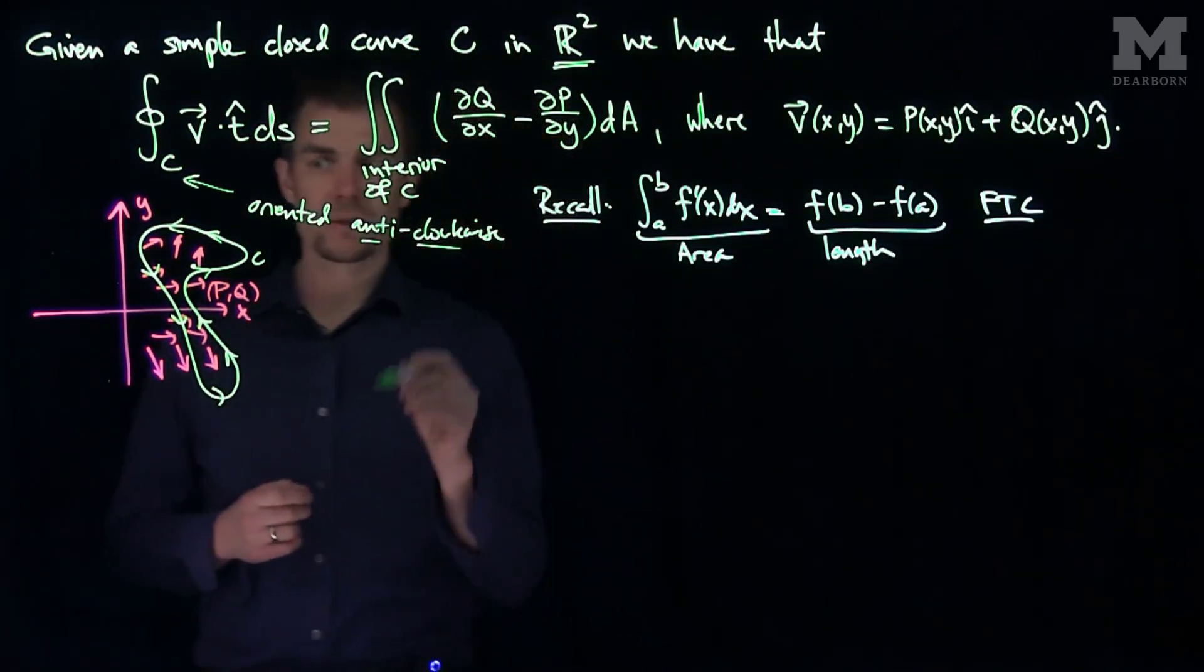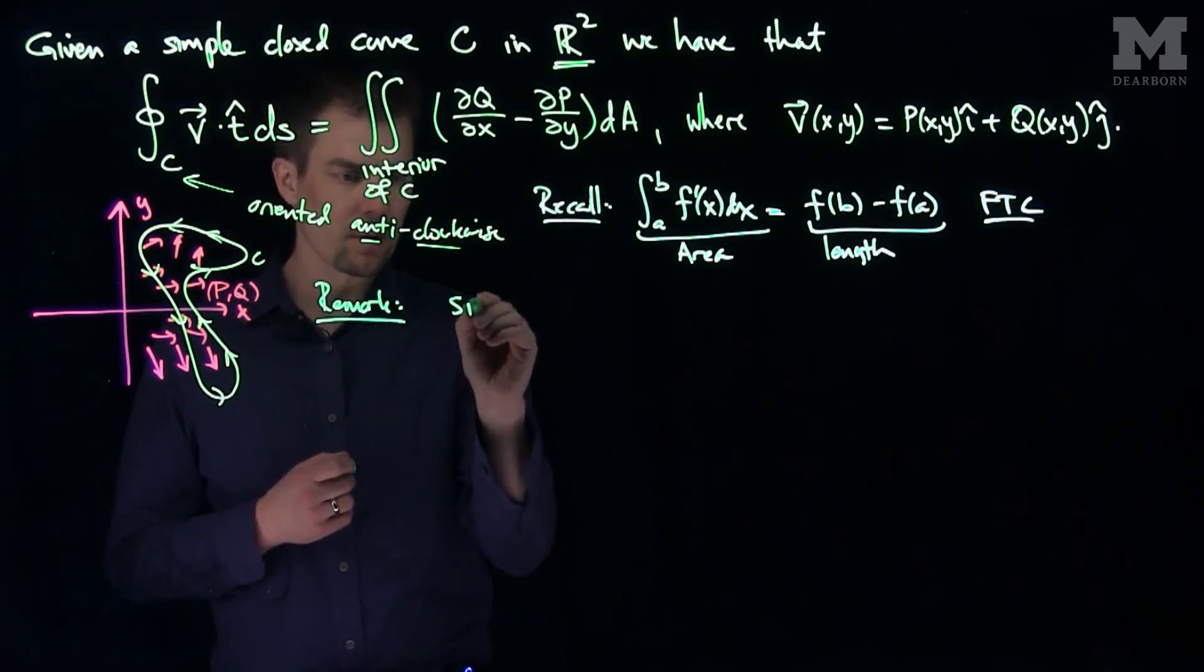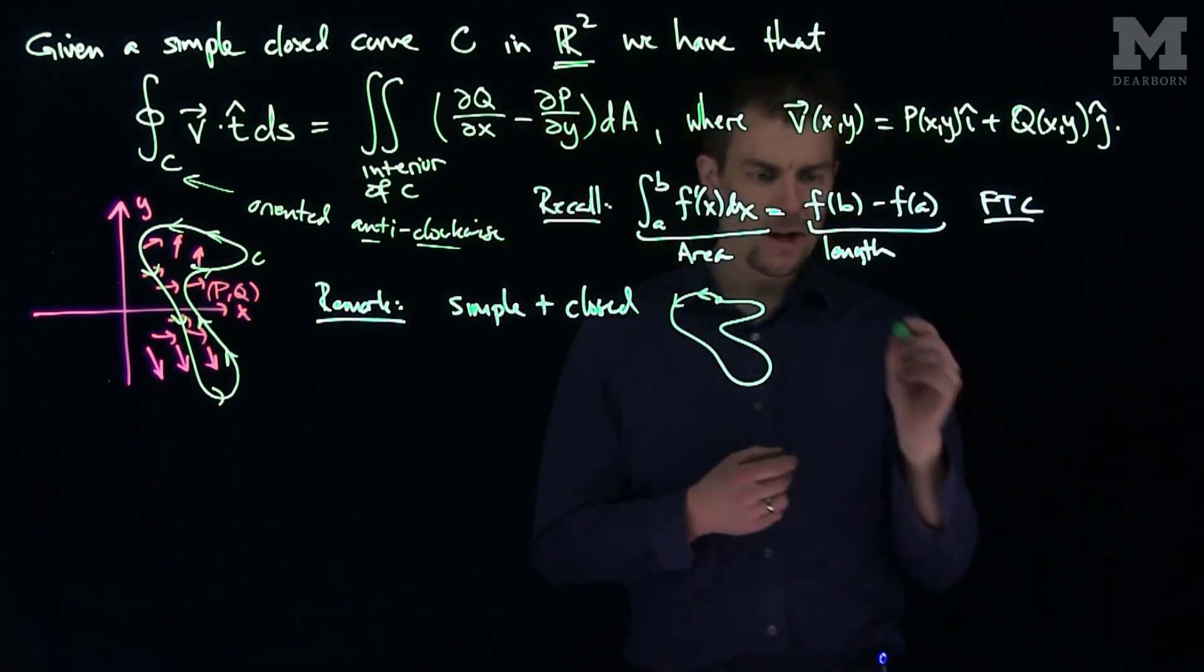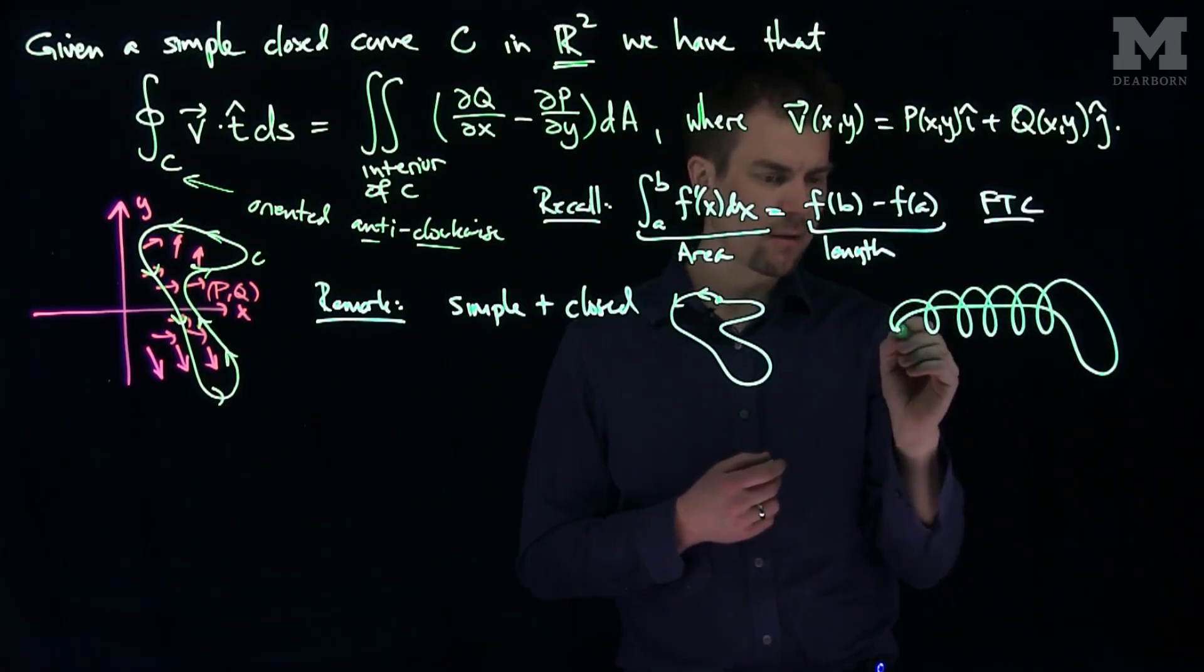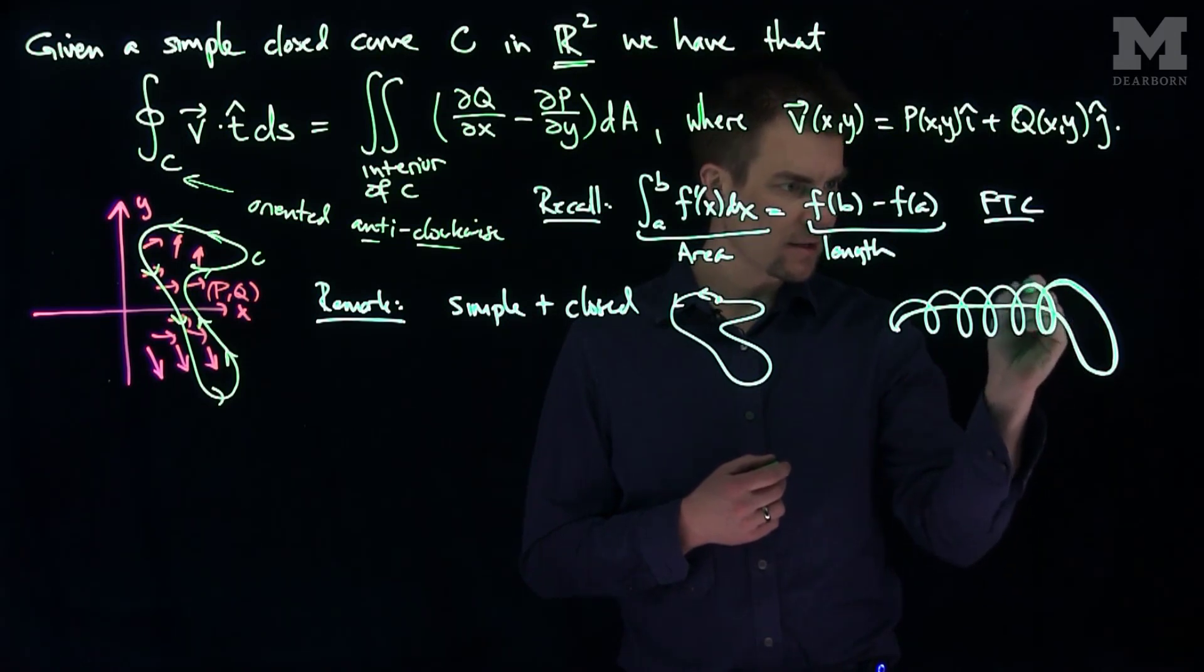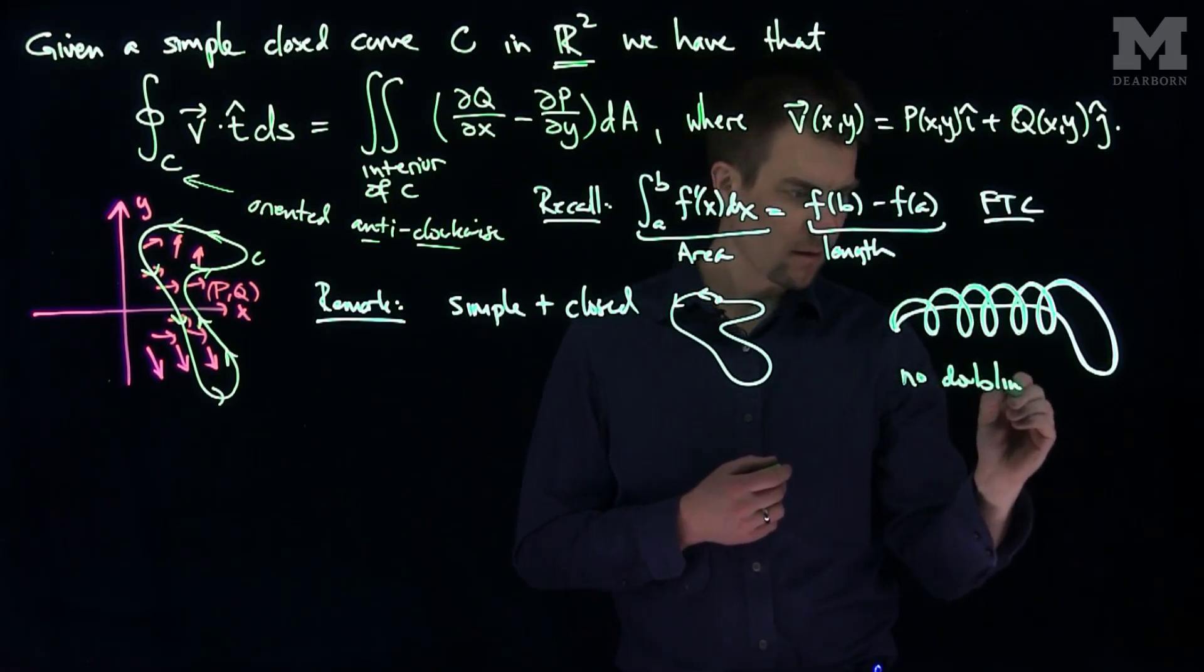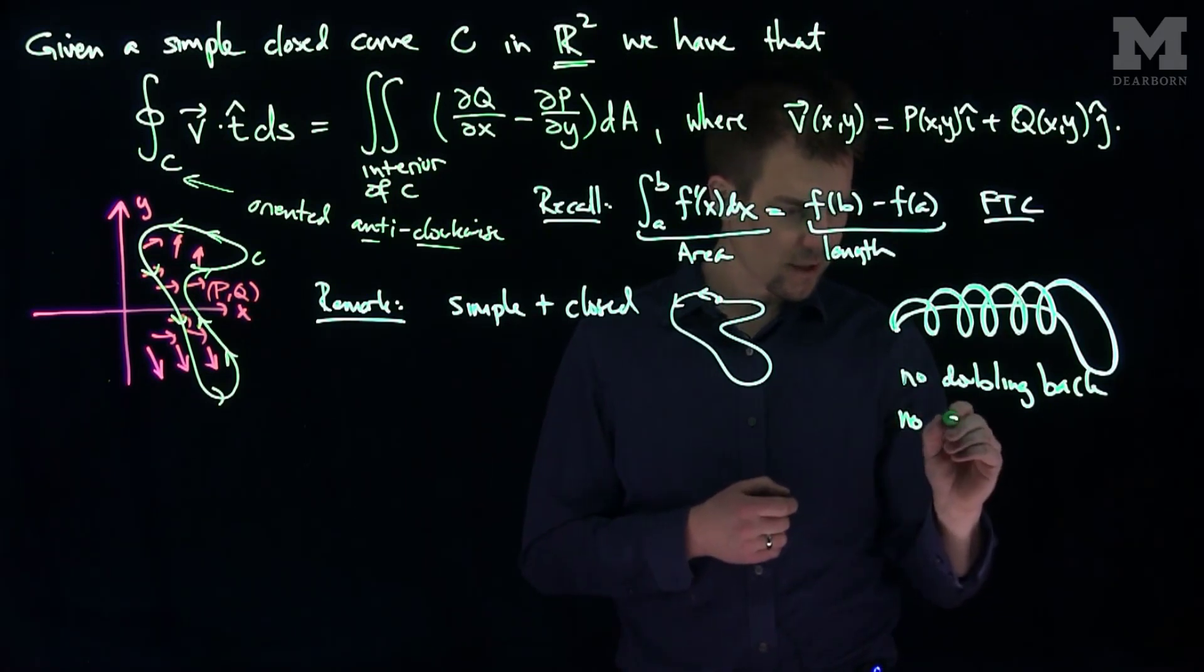When we're talking about this version of Green's theorem, let's make some remarks. Remark: simple and closed means the curve looks something like this. What would not simple be? Not simple would look something like this, where the curve crosses itself and the curve might double back on itself also. So we don't want the curve to double back and we don't want the curve to cross. No doubling back and no crossings, no self-intersections.